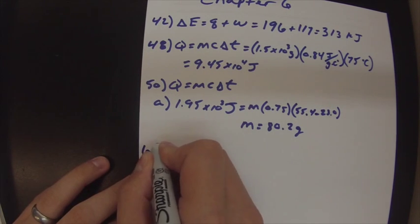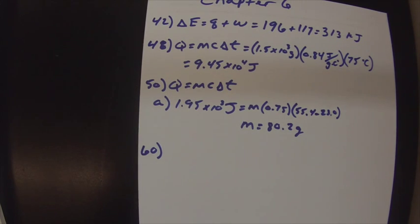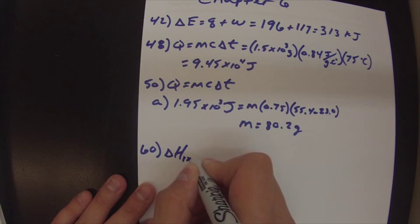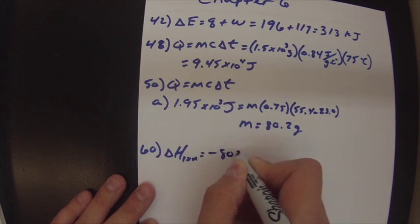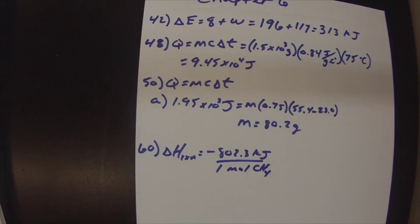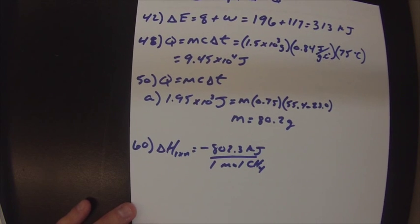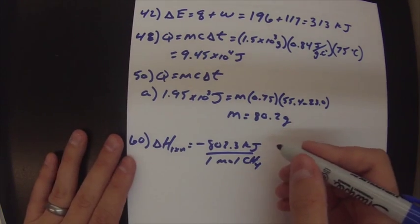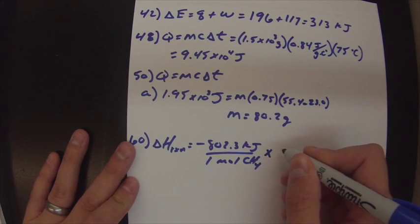Next up is number 60. Number 60 says what mass of methane must be burned to emit 267 kilojoules of heat. And so you know this is pretty straightforward. If you know the kilojoules of heat you need, so what you know here is you know that the delta H of the reaction is equal to negative 802.3 kilojoules, and that is in one mole of methane. So what it's saying is how many moles do you need, how many grams do you need, but how many moles do you need to make 267 kilojoules?